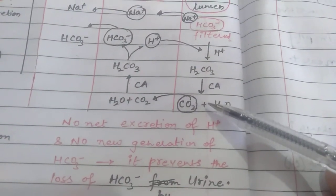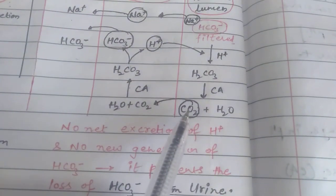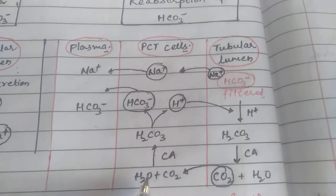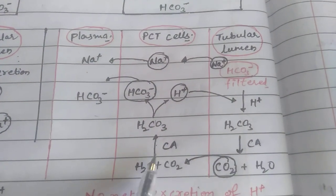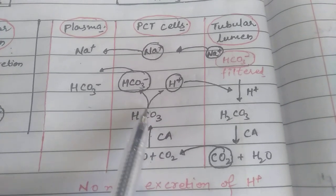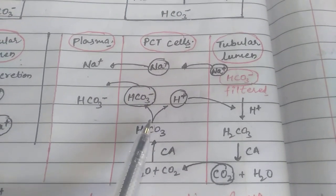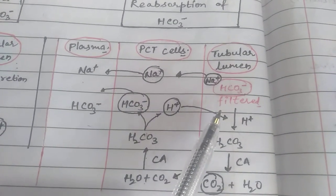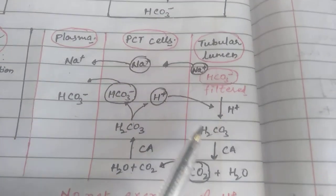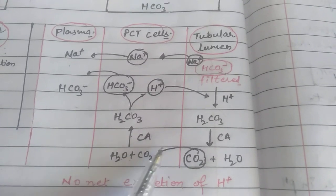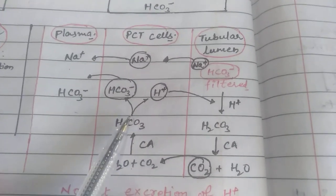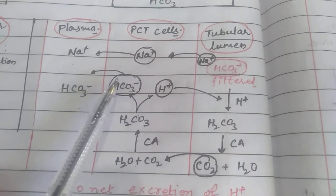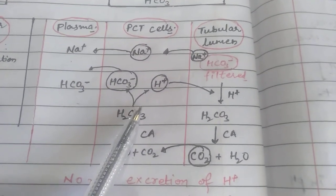When bicarbonate and H+ react, they produce carbonic acid. In the presence of carbonic anhydrase, this decomposes into water and CO2. CO2 can transfer through the cell membrane, so it re-enters the PCT cells, where it again reacts with water in the presence of carbonic anhydrase. The same process takes place: formation of carbonic acid, then H+ and bicarbonate. This cycle continues with H+ going from PCT cells into the tubular lumen, reacting with bicarbonate, forming CO2 again.